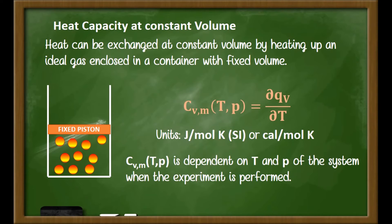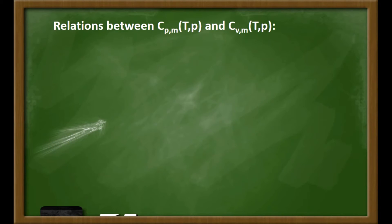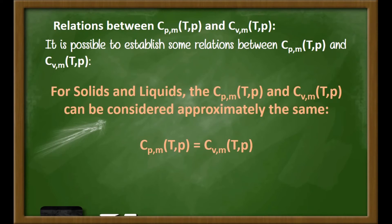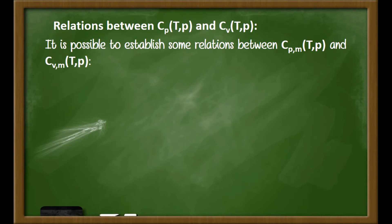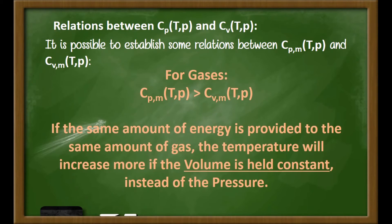Again, the heat capacity at constant volume is dependent on the temperature and pressure of the system when the experiment is performed. For solids and liquids, Cp and Cv can be considered approximately equal — there is no significant difference between values determined at constant pressure versus constant volume. For gases, however, the heat capacity at constant pressure is larger than at constant volume. This means that if the same amount of energy is provided to the same amount of gas, the temperature will increase more if volume is held constant rather than pressure.